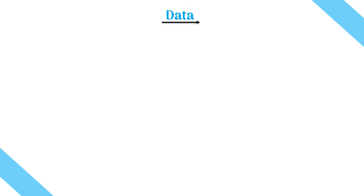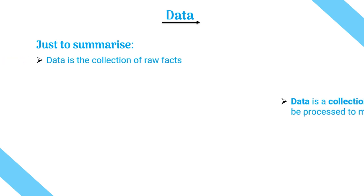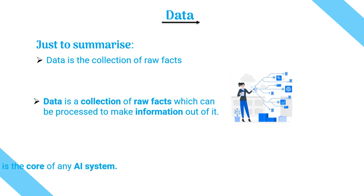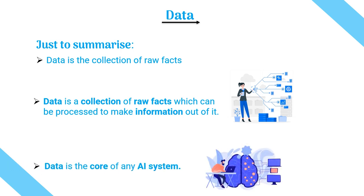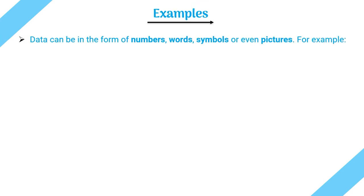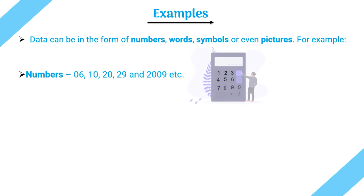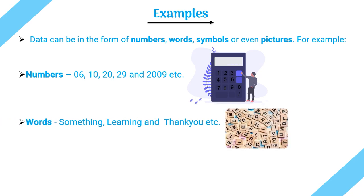Why accurate and reliable data? Let's discuss data first. We have already covered important things about data in the domains of AI — links will be provided in the description. To sum it up, data is a collection of raw facts which can be processed to make information. Data is the core of any AI system and can be in the form of numbers, words, symbols, or even pictures — for example, numbers like 10, 20, 2006; words like 'learning', 'thank you'; and symbols as shown on screen.